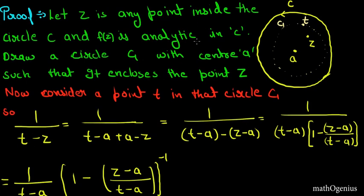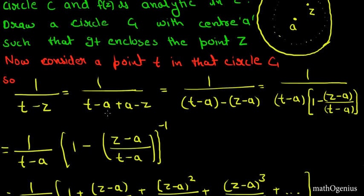We will subtract and add a inside 1/(t−z) because we need a in our expression. So t−z becomes (t−a) − (z−a). We take (t−a) common, giving: 1/(t−z) = 1/[(t−a)(1 − (z−a)/(t−a))]. We then move the denominator factor up, making the power negative: 1/(t−z) = [1/(t−a)] · [1 − (z−a)/(t−a)]⁻¹.